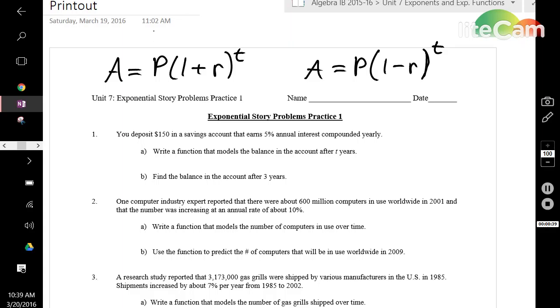1 plus r is going to be your growth model because it creates a b value larger than 1, therefore making it a growth exponential function. The 1 minus r function is going to be decay because 1 minus r will make a b value less than 1 but bigger than 0, which is the definition of an exponential decay function.